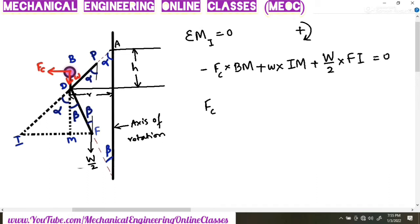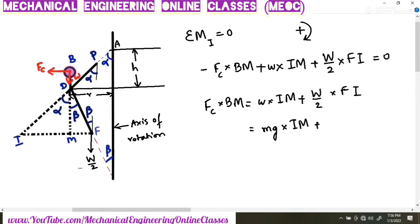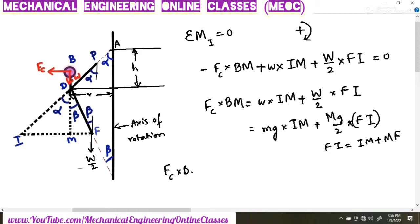Rearranging: Fc × BM = w × IM + (W/2) × FI. Writing weights in terms of masses: Fc × BM = mg × IM + (Mg/2) × FI. Since FI = IM + MF, we substitute: Fc × BM = mg × IM + (Mg/2) × (IM + MF).